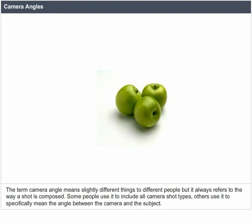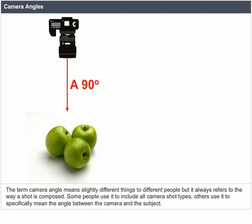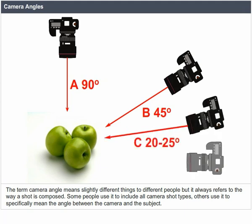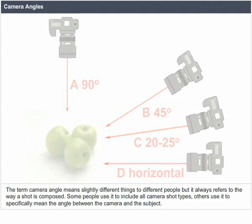Camera angles. The term camera angle means different things to different people, but it always refers to the way a shot is composed. Some people use it to include all camera shot types, while others use it to specifically mean the angle between the camera and the subject.